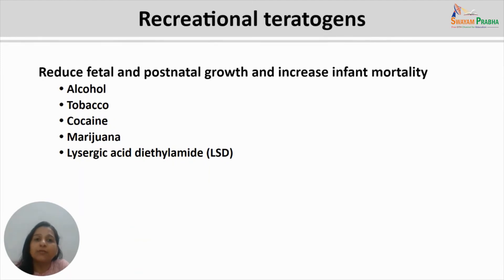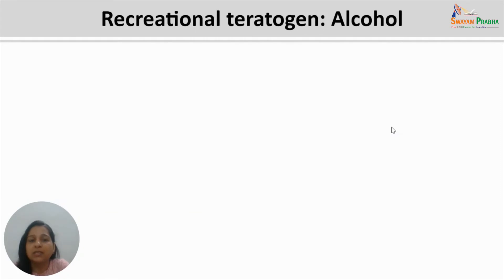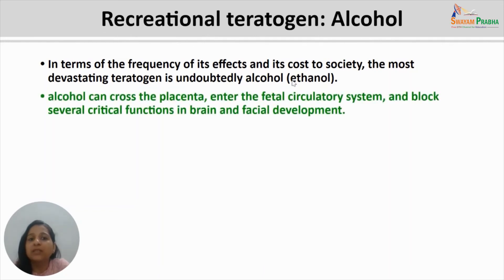The next category of teratogens is recreational teratogens. These are substances taken as recreation, not part of any drug course given to pregnant mothers, and can be easily avoided. Recreational teratogens are associated with reduced fetal and postnatal growth and also infant mortality. Major recreational teratogens are alcohol, tobacco, cocaine, marijuana, and LSD. In terms of frequency of effects and cost to society, the most devastating teratogen is undoubtedly alcohol.